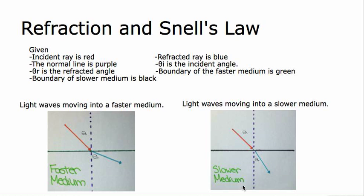In the diagram, light waves are moving into a slower medium. The red incident ray goes through the boundary, which is black, and then becomes a blue refracted ray, bending towards the line of normal, which is purple. The refracted angle is smaller than the incident angle.